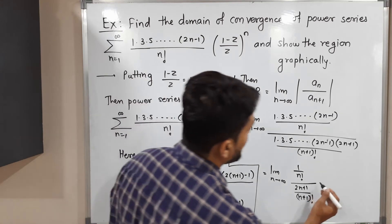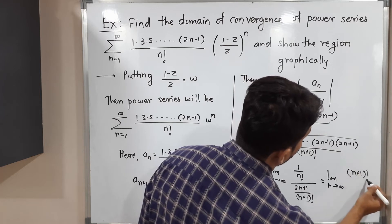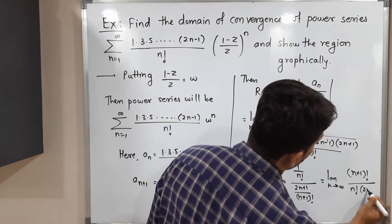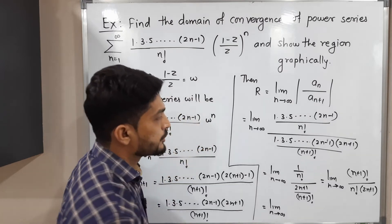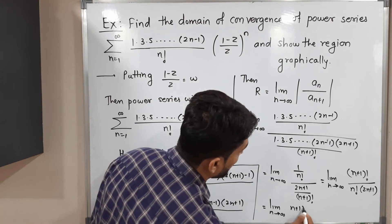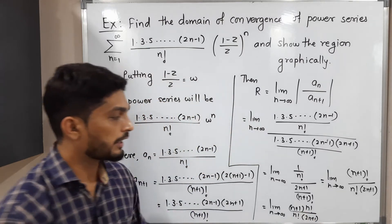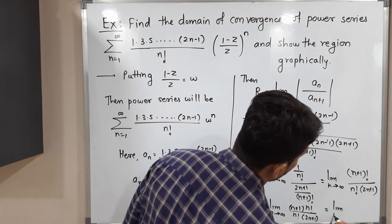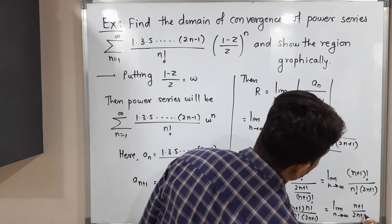Shifting (n+1)! to the numerator, we get: limit as n tends to infinity of (n+1)! divided by [n! times (2n+1)]. Since (n+1)! equals (n+1) times n!, the n! cancels, giving limit as n tends to infinity of (n+1) divided by (2n+1).